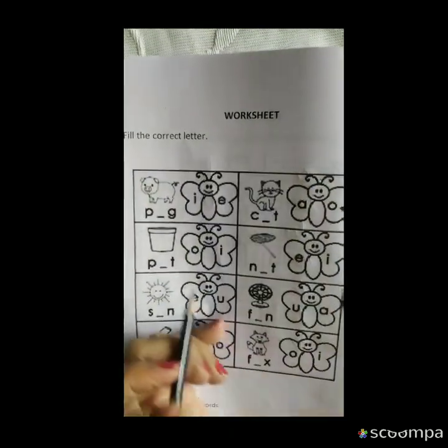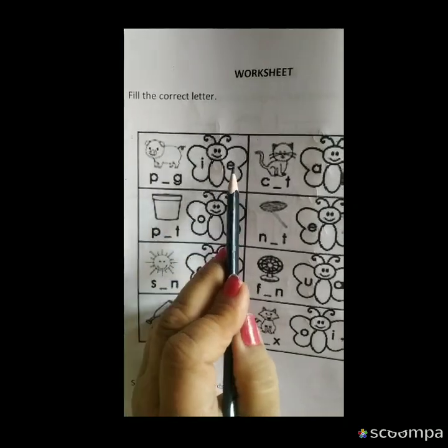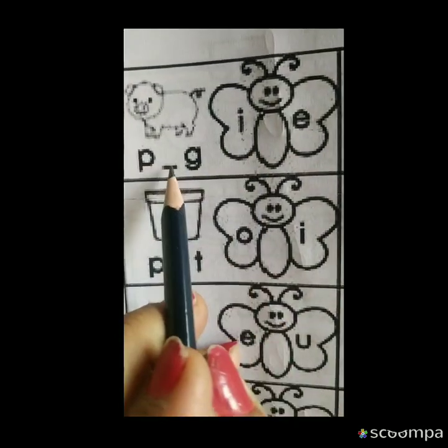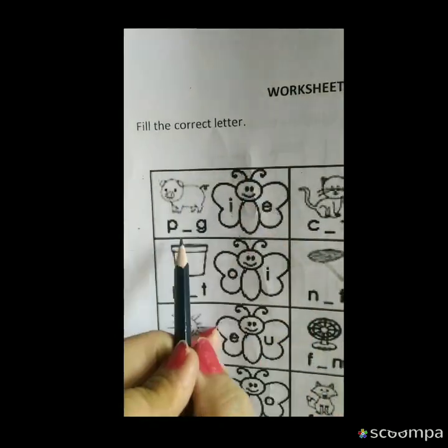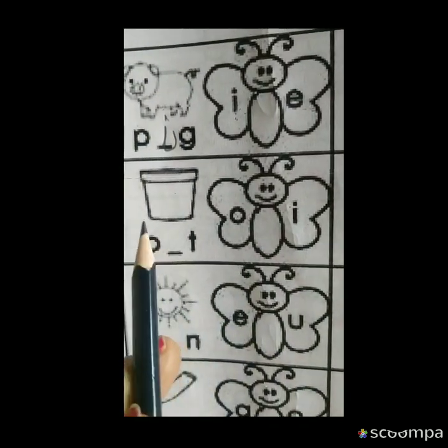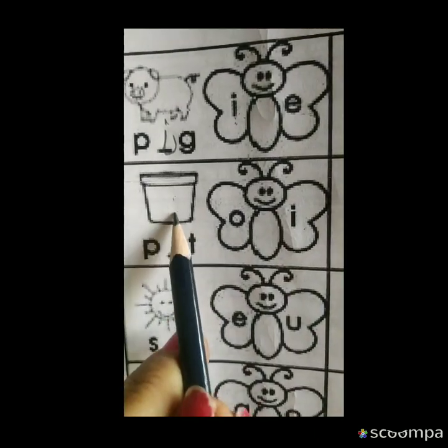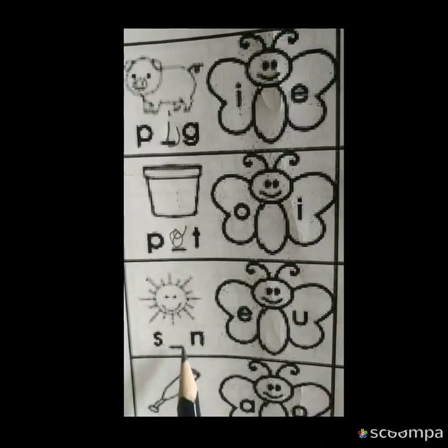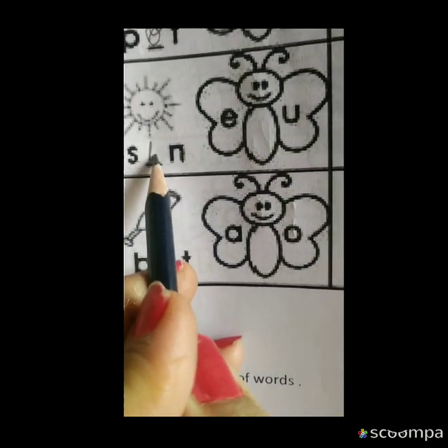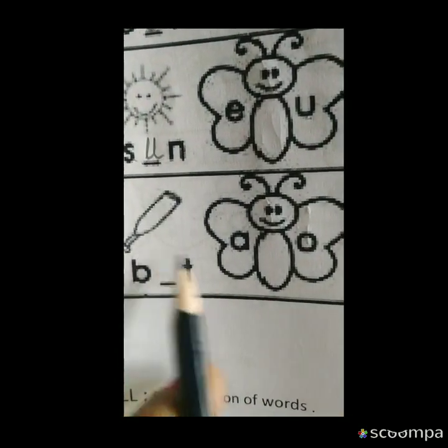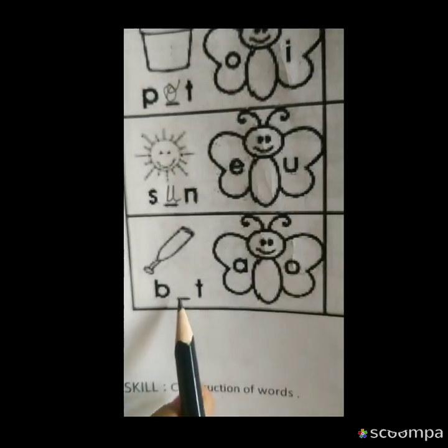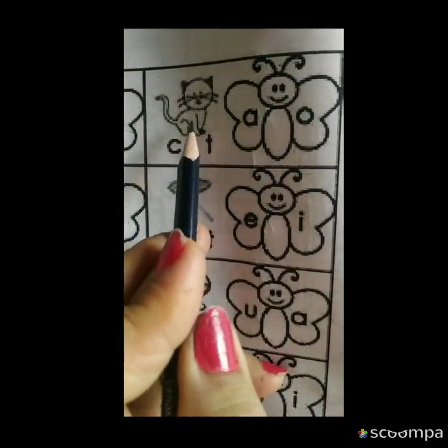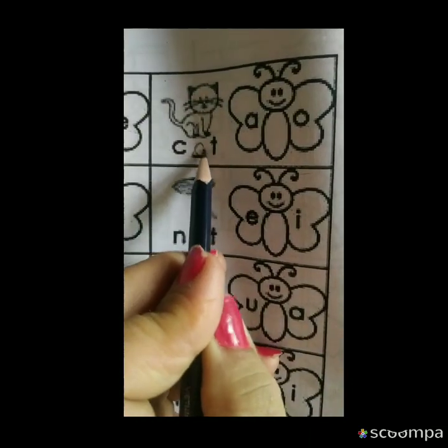After that you will do this work. This is the picture of pig. Here we have given two letters. Which letter is correct for it? Find the correct letter. Pig picture, pot, O and I. It is not pit, it is pot. And which picture is sun? It's A. So we will write A. This is bat. It's A. This is cat. A cat, not cot. It's cat.